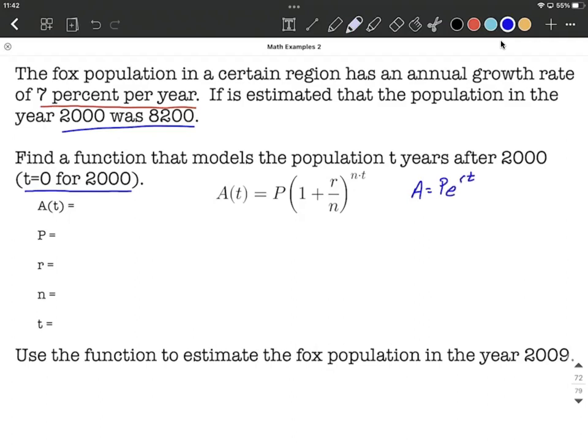p is the principal when we're thinking about banking, but it's a starting amount in examples like this. Our starting amount in the year 2000 was 8,200. So p is going to be 8,200, and I'm listing out my variables off to the left-hand side as we're creating this model. Then we'll fill them in.